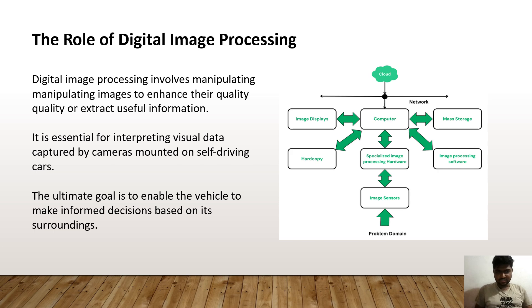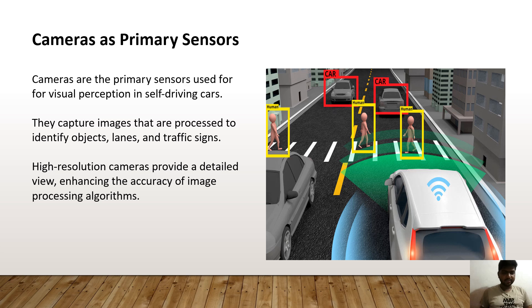This is a block diagram which shows the different types of roles of digital image processing. Cameras are the special sensors used for visual perception in self-driving cars. They capture images that are processed to identify objects, lanes and traffic signal signs. High resolution cameras provide a detailed view, enhancing the accuracy of these image processing algorithms.